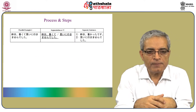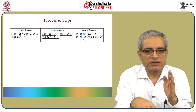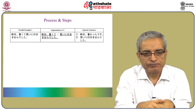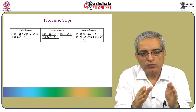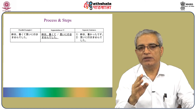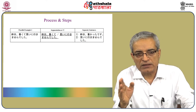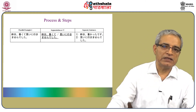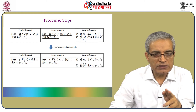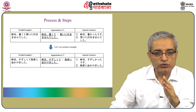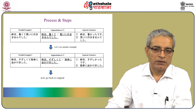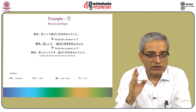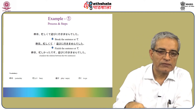Let's see the translations and the steps required. 'Kino, atzukute, kai-ni ikimasen deshita' can be broken down into two sentences: 'Kino, atzukatta desu' and 'kai-ni ikimasen deshita.' Similarly, 'Kino, suzushikute, sampo-ni dekakimashita' is broken into two separate sentences. Going back to the original: 'Kino, isogashikute' — break here — 'asobi-ni ikimasen deshita.' The two separate sentences become 'Isogashikatta desu' and 'asobi-ni ikimasen deshita.'